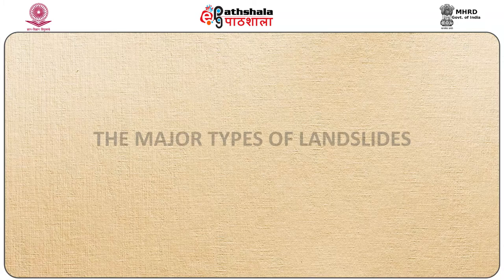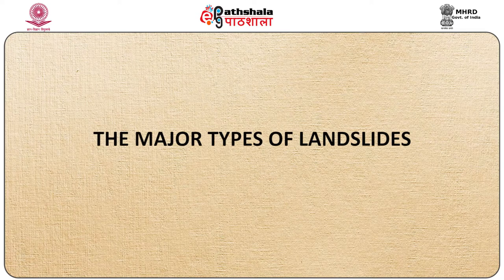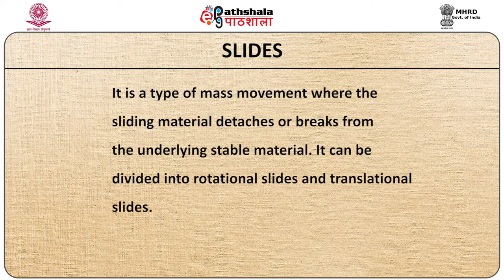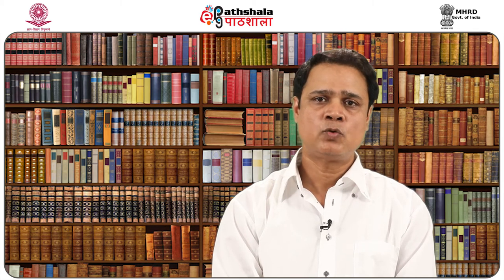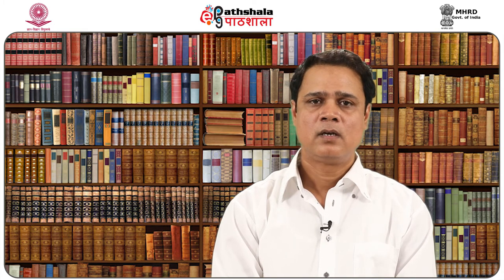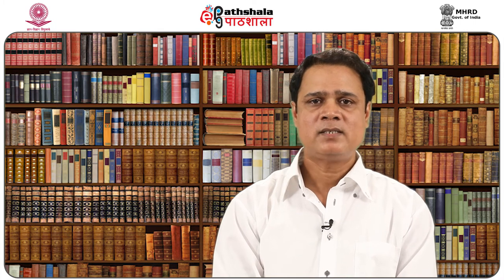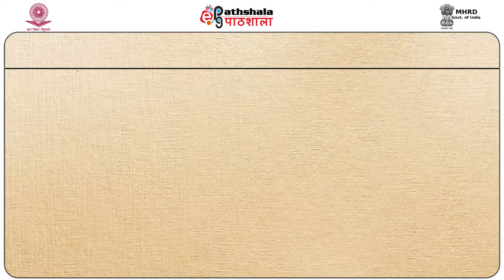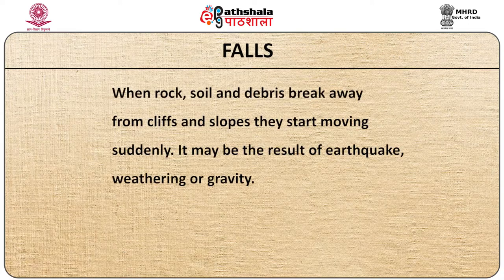The major types of landslides include: Slides, where sliding material detaches from the underlying stable material. These can be rotational slides, where movement is rotational with the axis parallel to the ground surface, or translational slides, which show no rotation, such as block slides where a single unit slides as a coherent mass. Falls occur when rock, soil and debris break away from a cliff or slope and start moving suddenly, as a result of earthquakes, weathering or gravity.